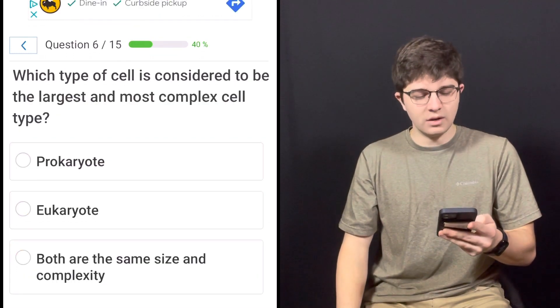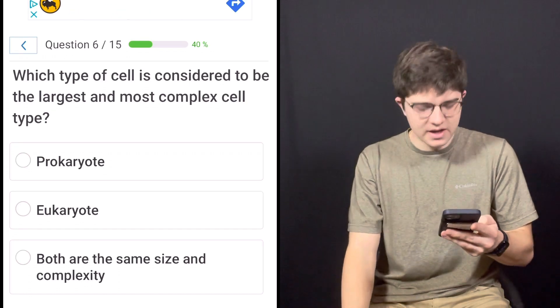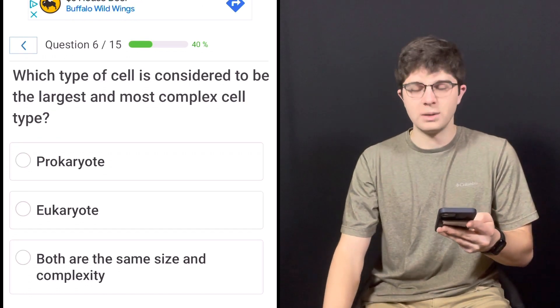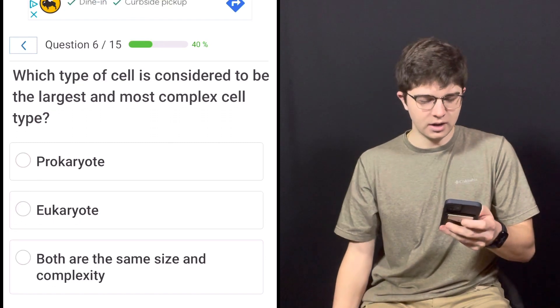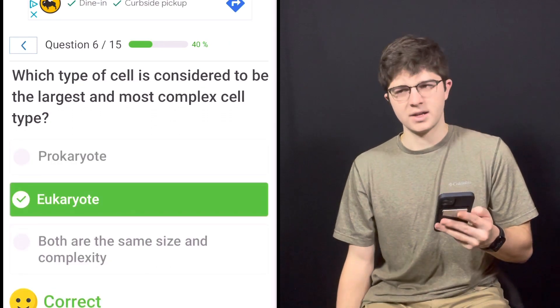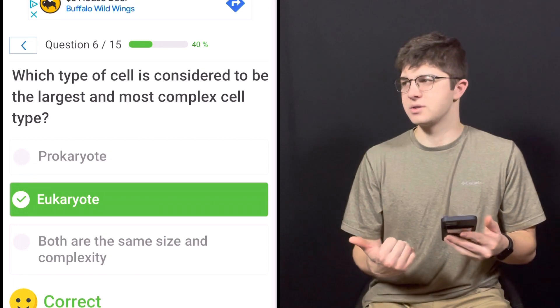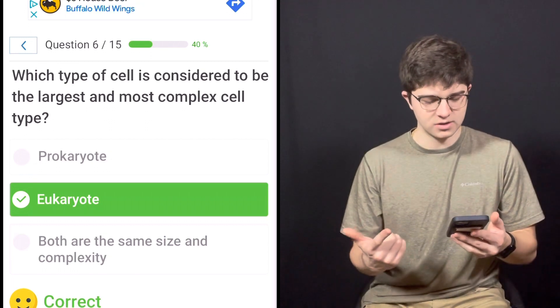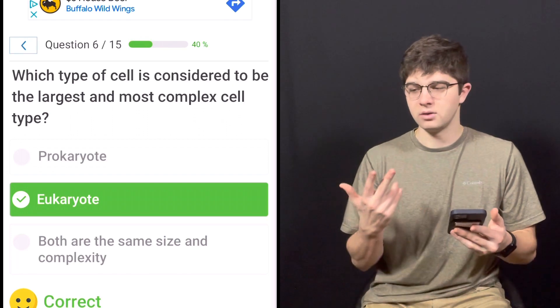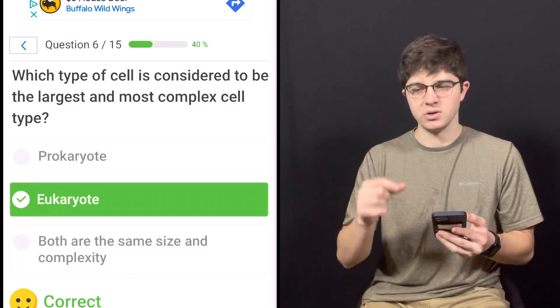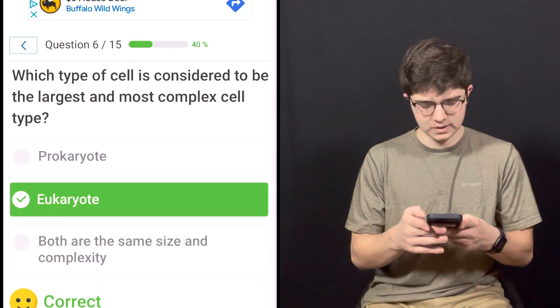Which type of cell is considered to be the largest and most complex cell type? A prokaryote, a eukaryote, or both are the same size and complexity? The eukaryote is both larger and more complex due to the fact that, one, they have membrane-bound organelles. They have compartmentalization. And they're 10 times bigger. So our cells are 10 times bigger than most bacteria cells, which is really interesting.